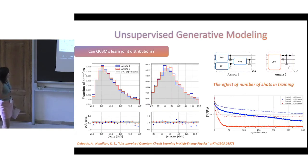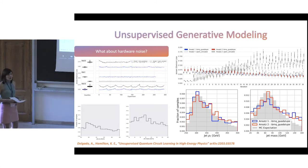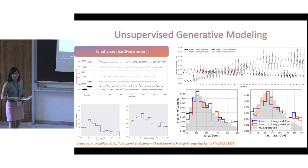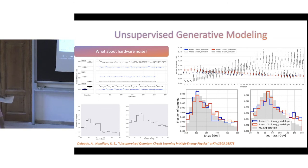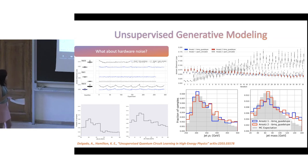We also wanted to understand how hardware noise affects the training, since all previous results were run on the PennyLane simulator with no noise. For our 8-qubit QCBM training using two ansatzes with 39 layers of rotational and entangling gates — about 400 parameters to train — we first obtained an optimal set of parameters on simulation, and then executed that circuit on hardware using those optimal parameters. We used IBM Guadalupe.